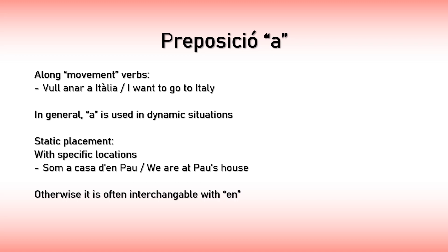You can also use the preposition A in static situations. For example, when you specify a physical and known location: 'We are at Pau's house.' This house is a physical location, it's a specific one, so you use A.